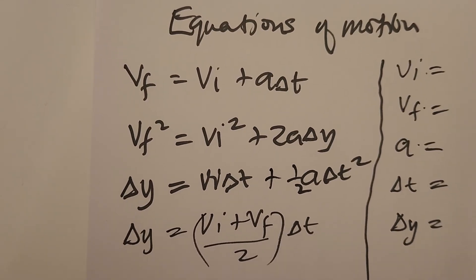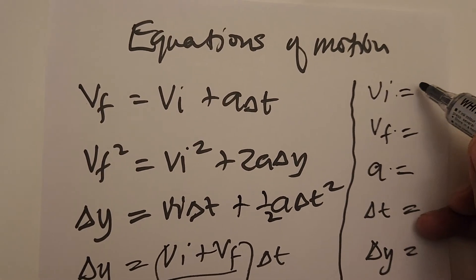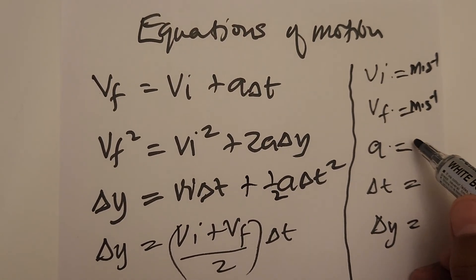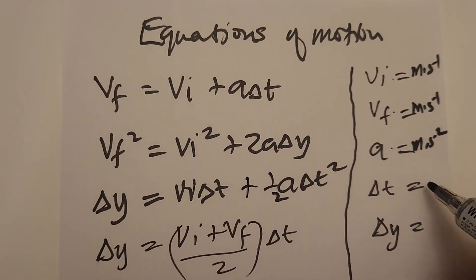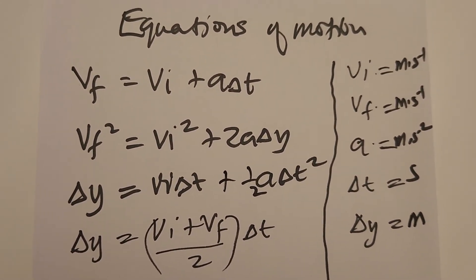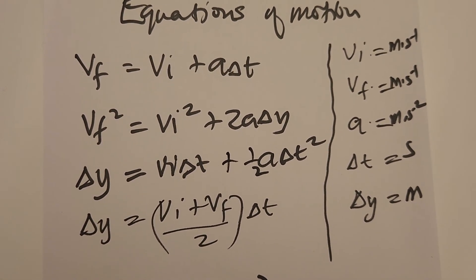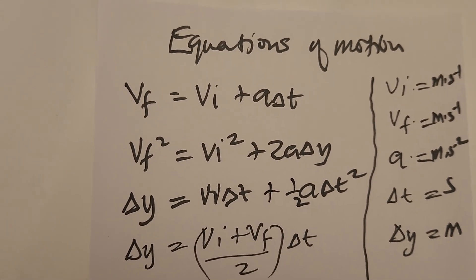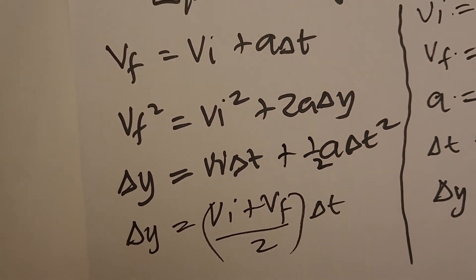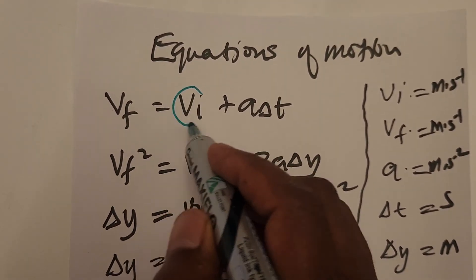In terms of units: initial and final velocity are measured in meters per second, acceleration in meters per second squared, time in seconds, and Δy in meters. Importantly, all four equations of motion share one variable that appears in every single one of them: vi.